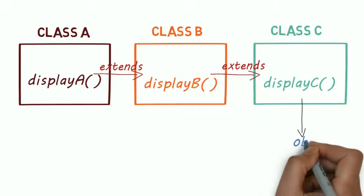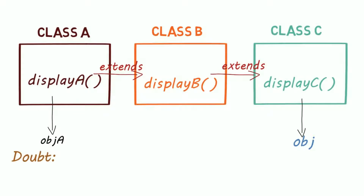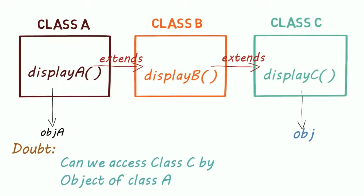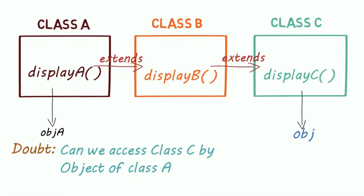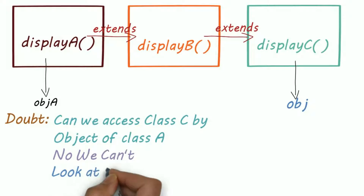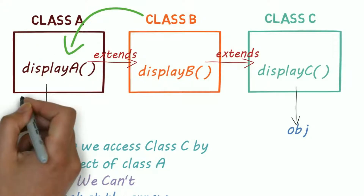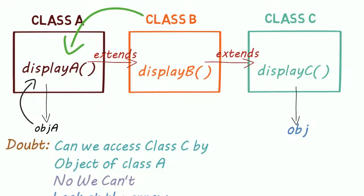Now, if I created an object of class C — let's say obj is the object of class C — can I access the display function in class C by an object of class A? The answer is no, we can't. Look at the arrow direction. Class B object can access class A, but class A object can only access its own display method.